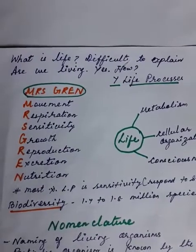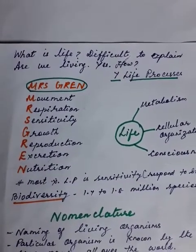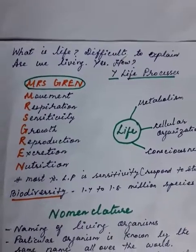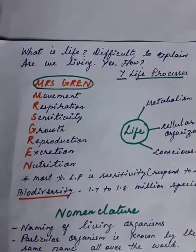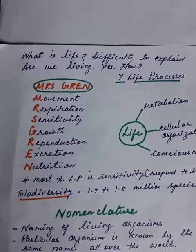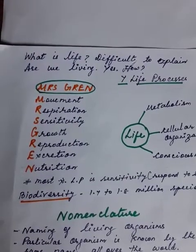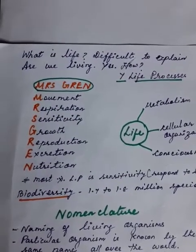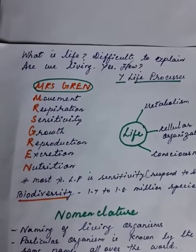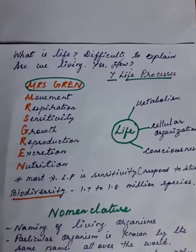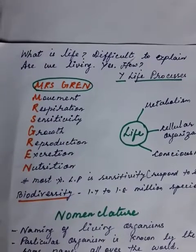You will be amazed to see the wonderful world of living organisms. What is life? It's really difficult to answer and difficult to explain. For example, think about ourselves — are we living? Yes. How can you say we are living? There are seven basic life processes which an organism possesses, based upon which we can say a particular organism is living.